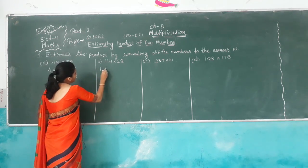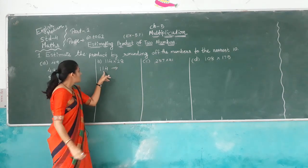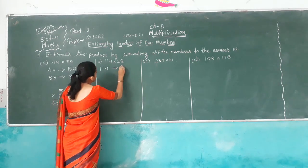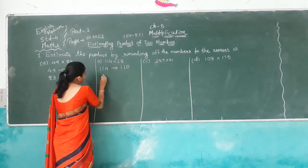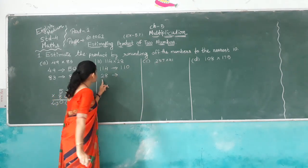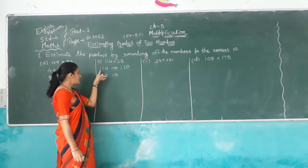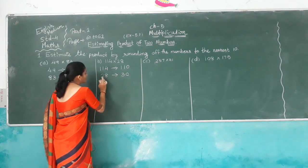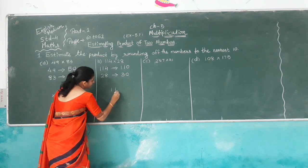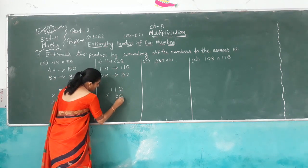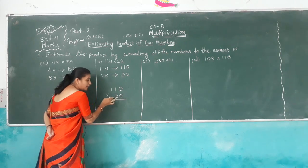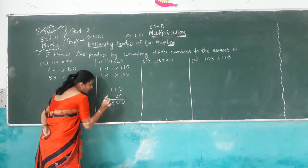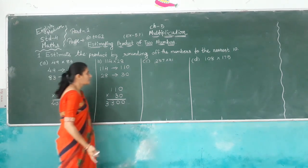Next one: 140. The ones digit is 4, which is less than 5, so nearest 10 is 140. Then 28: the ones digit is 8, which is more than 5, so add 1 — 2 plus 1 is 3, keep 0, making 30. So 28 is nearest to 30. Now 140 multiplied by 30: keep 1, 0. 3 times 0 is 0, 3 times 1 is 3, 3 times 1 is 3. So answer is 3,300.